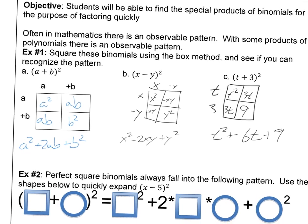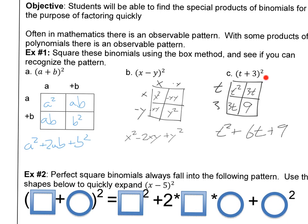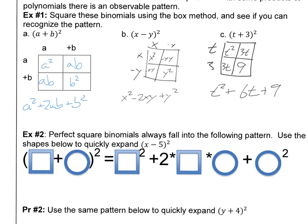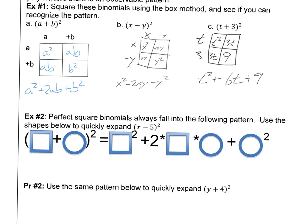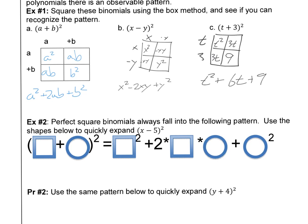That one looks a little different because we had numbers in it, and the previous ones only had variables. Here's the pattern: every time, we take the first term and square it. Then we take the two terms, multiply them together, and multiply by 2 — so x times y times 2 gives 2xy, but since it was a negative y it becomes negative 2xy. And the last term is just the last term squared.